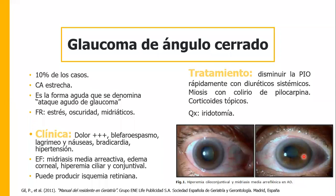El dolor es muy intenso. Hay espasmo, lagrimeo, náuseas, bradicardia e hipertensión como síntomas vegetativos. En la exploración física encontramos midriasis media arreactiva, el paciente no responde a los estímulos de luz. Hay edema corneal, inyección conjuntival e hiperemia ciliar. Puede producir isquemia retiniana si se deja pasar mucho tiempo.